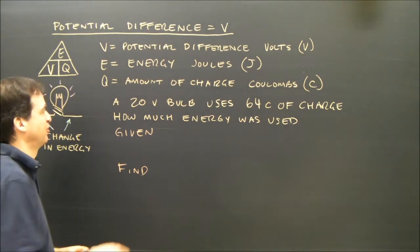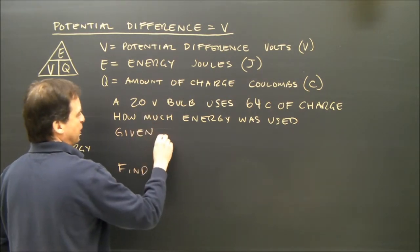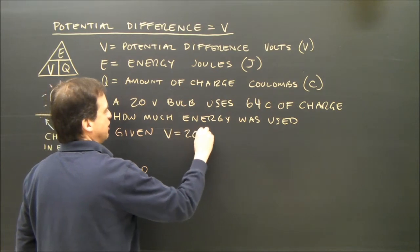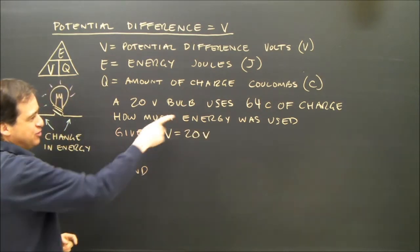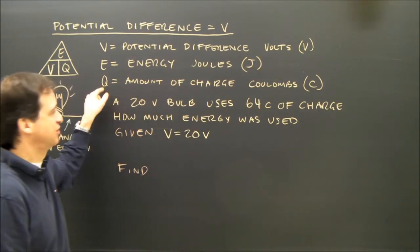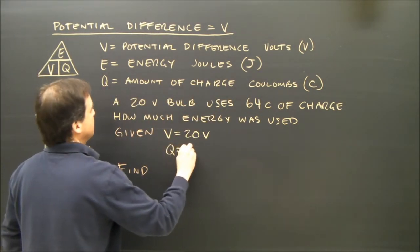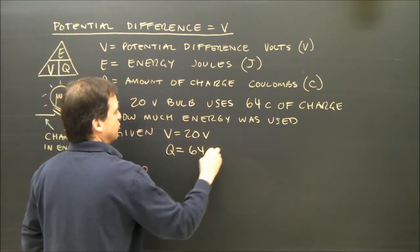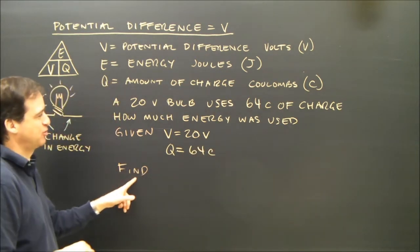First, you write down what you're given. We have a 20 volt bulb, so V equals 20 volts, and it uses 64 coulombs of charge. The coulombs reminds me that it's Q here, that it's charge. So Q equals 64 coulombs. And what are we trying to find?